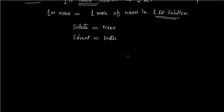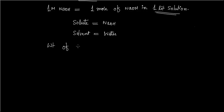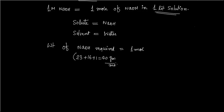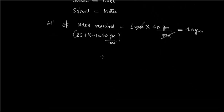Now I am interested in the weight of NaOH required. The weight of 1 mole of NaOH equals 1 mole multiplied by its molecular weight. The molecular weight of NaOH is 23 + 16 + 1 = 40 g/mol. So we multiply by 40 g/mol and get 40 grams of NaOH required.